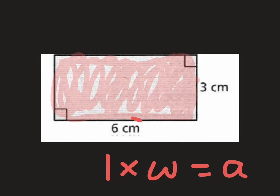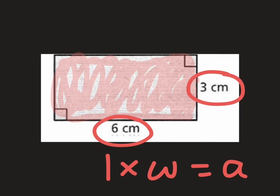So the length is 6, the width is 3. Now you should be able to figure out what the area of this rectangle is.